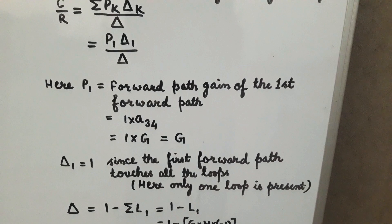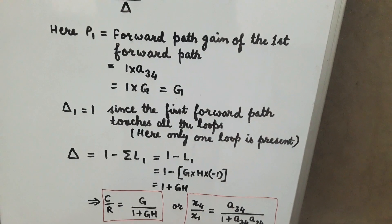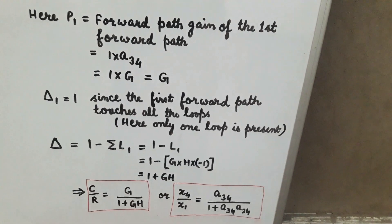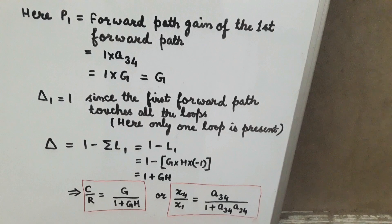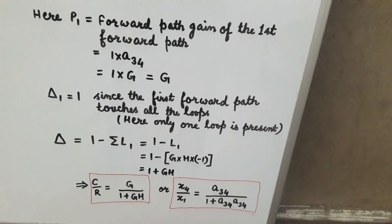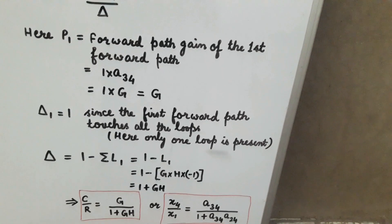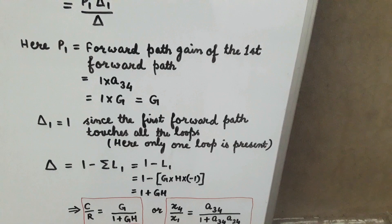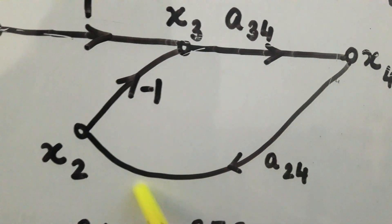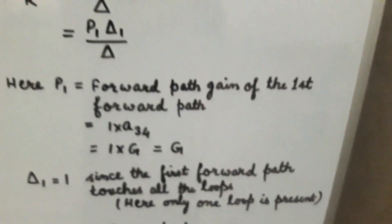Now we find delta: delta = 1 − summation(l1) + summation(l2) − summation(l3) + ... Since only one loop is present in this signal flow graph, only the term l1 is present. The value of l1 is the sum of the loop gains. From the figure, l1 = a34 × a42 × (−1).